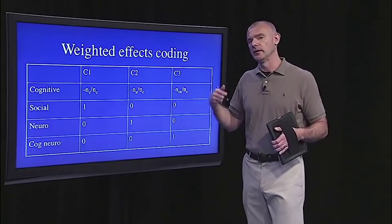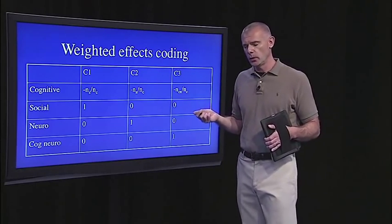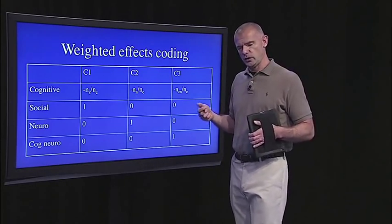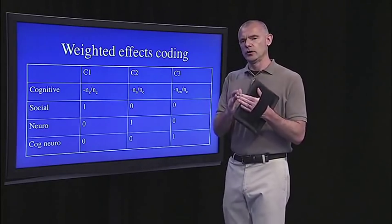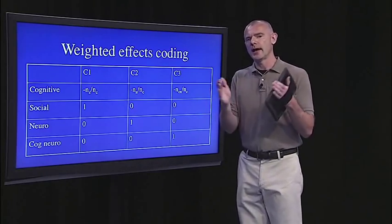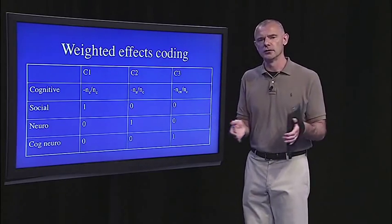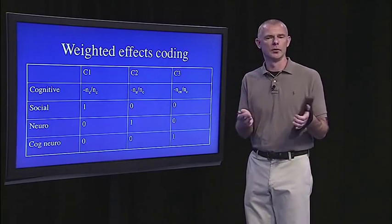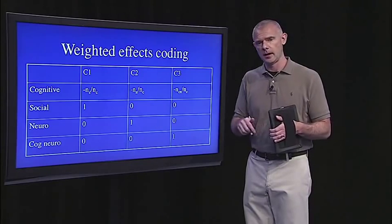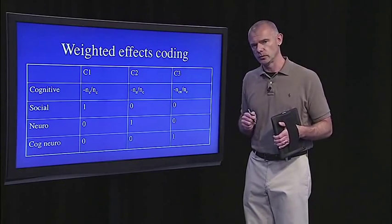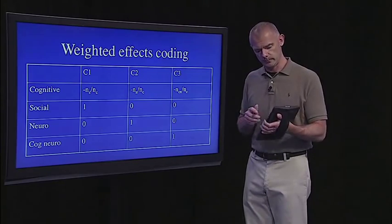So in the next segment and the next lecture, when we do moderation analyses, we're just going to code categorical predictors using that simple dummy coding scheme — and that's what we'll do in the next segment.